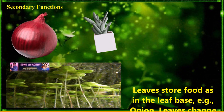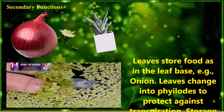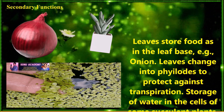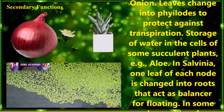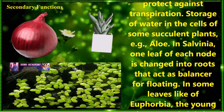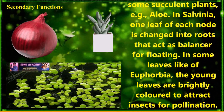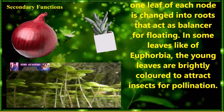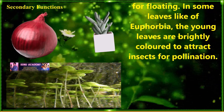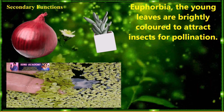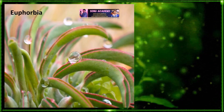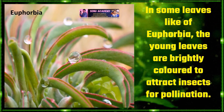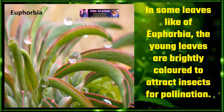Now let us discuss about secondary functions of the leaf. Leaves store food in their leaf base — example: onion. Leaves may exchange into phyllodes to protect against transpiration. Storage of water occurs in the cells of some succulent plants — example: Aloe. In Salvinia, one leaf at each node is changed into roots that act as a balancer for floating. In some leaves like Euphorbia, the young leaves are brightly colored to attract insects for pollination.